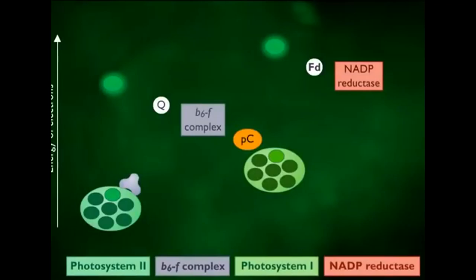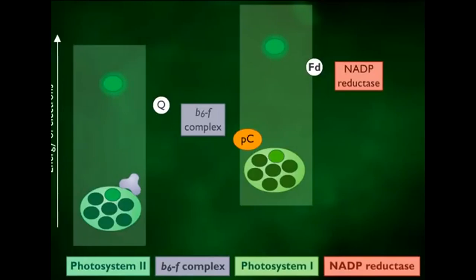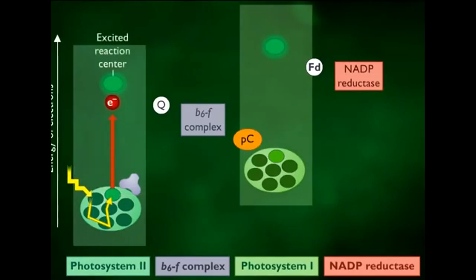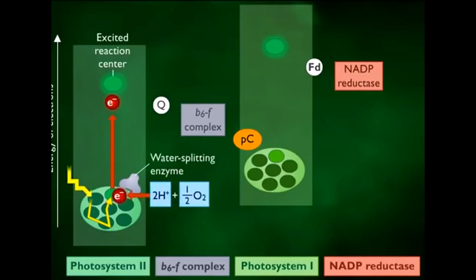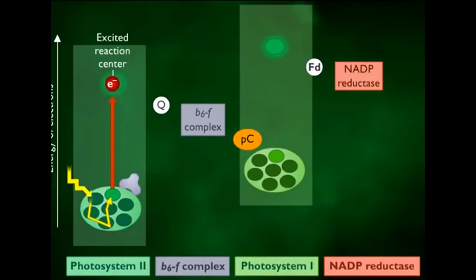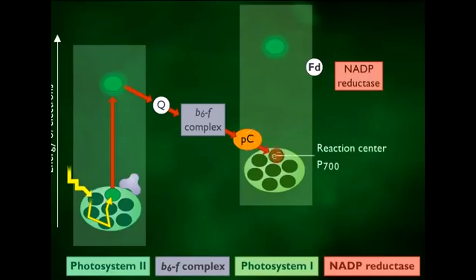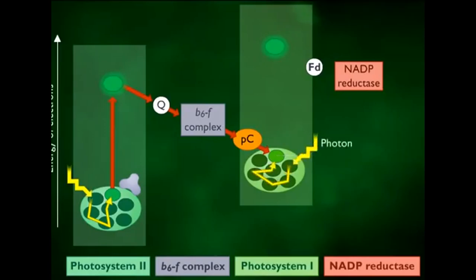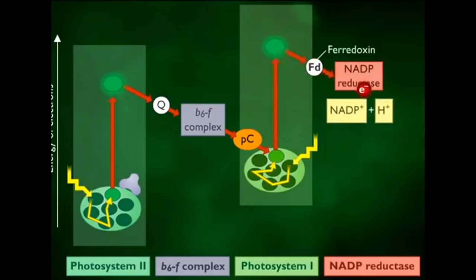Plants and cyanobacteria utilize two photosystems which work sequentially to produce both energy and reducing power. A photon of light ejects a high-energy electron from photosystem II. The electron lost from photosystem II is replaced by an electron generated from the splitting of water and the production of oxygen via photolysis. The electron then travels from the excited reaction center of photosystem II to plastoquinone, to the B6F complex, to plastocyanin, and finally to the reaction center of photosystem I. This electron transport system generates a proton motive force used to produce ATP.